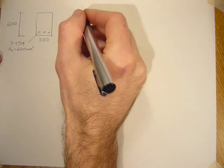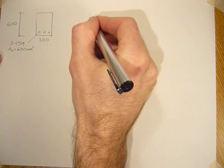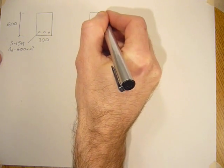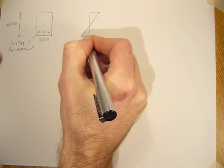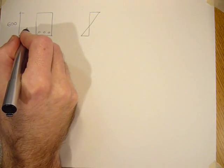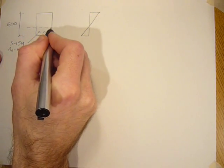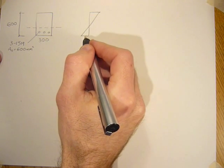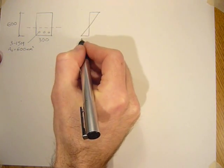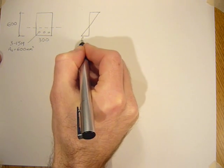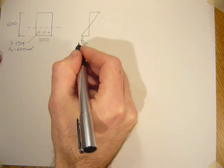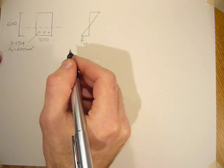If we look at the stress diagram, we are looking for the moment that we can put on this section that would just make the bottom fibers in the concrete crack. So we're looking for what kind of moment which would cause F cracking in the bottom fibers of the concrete.